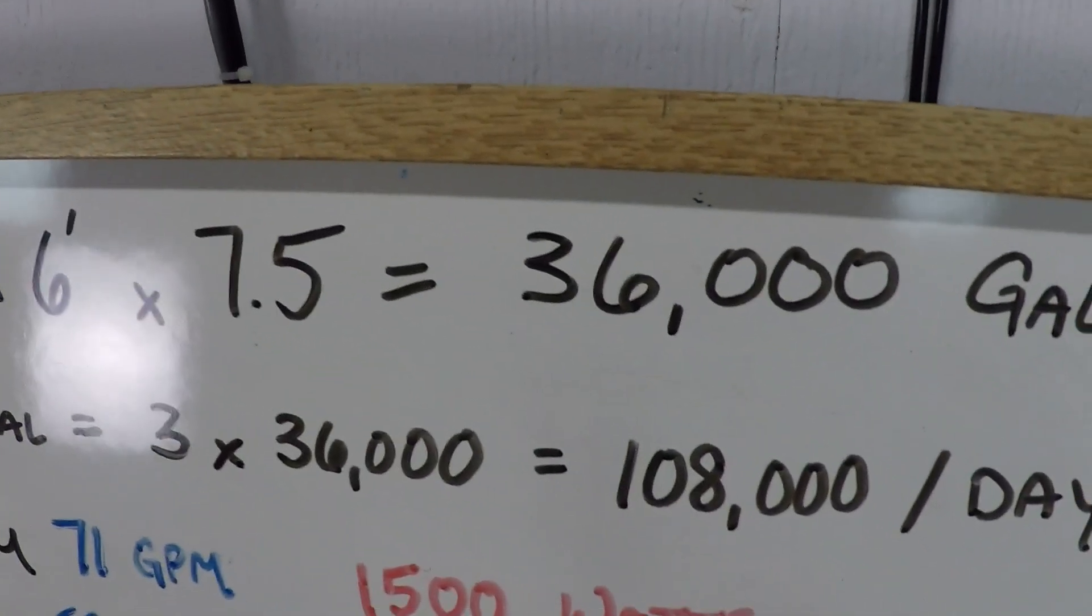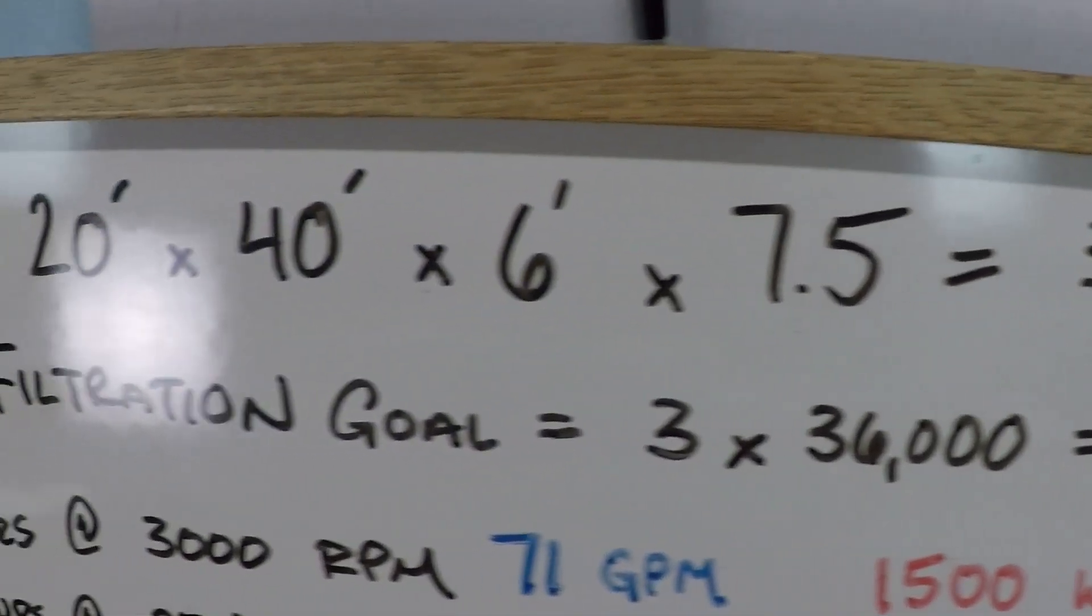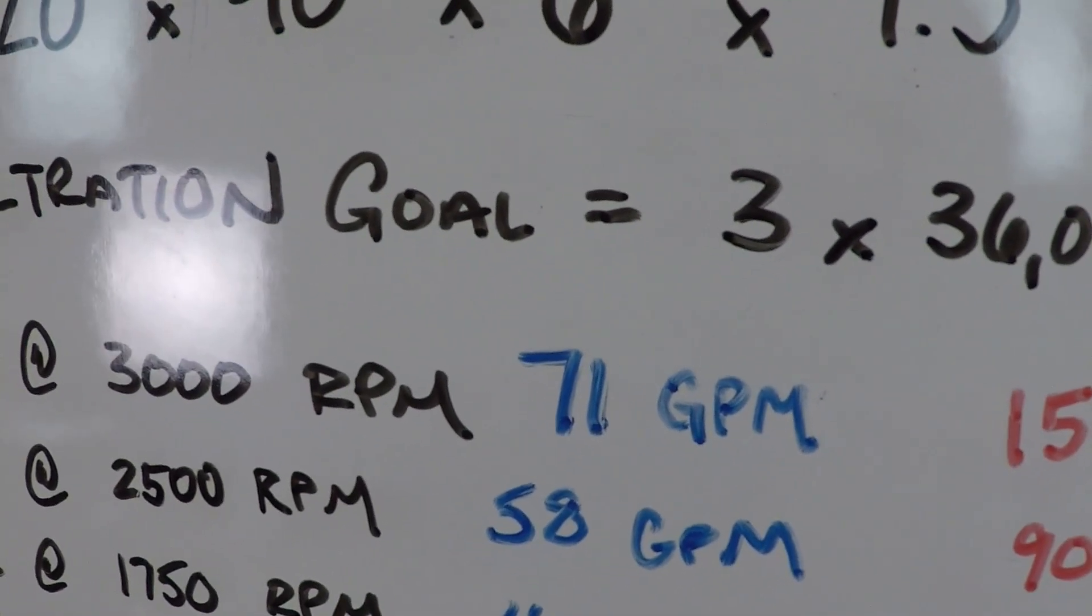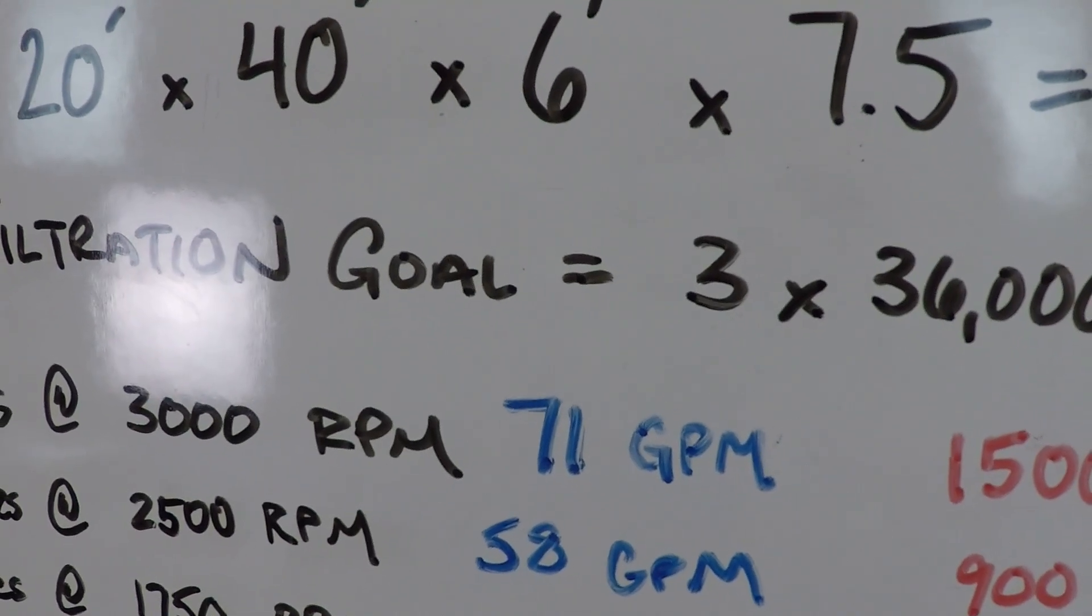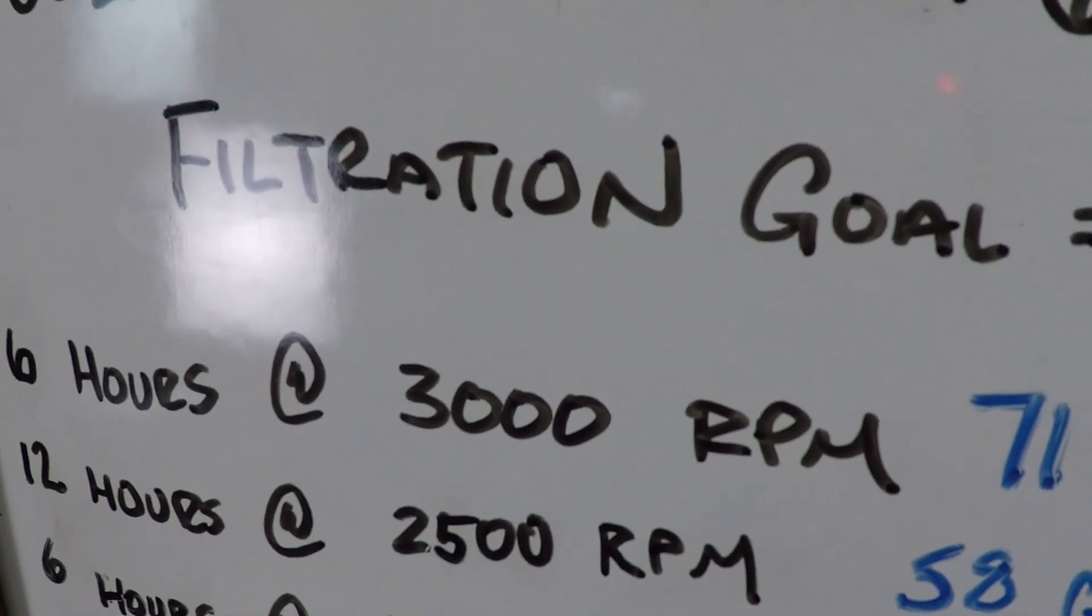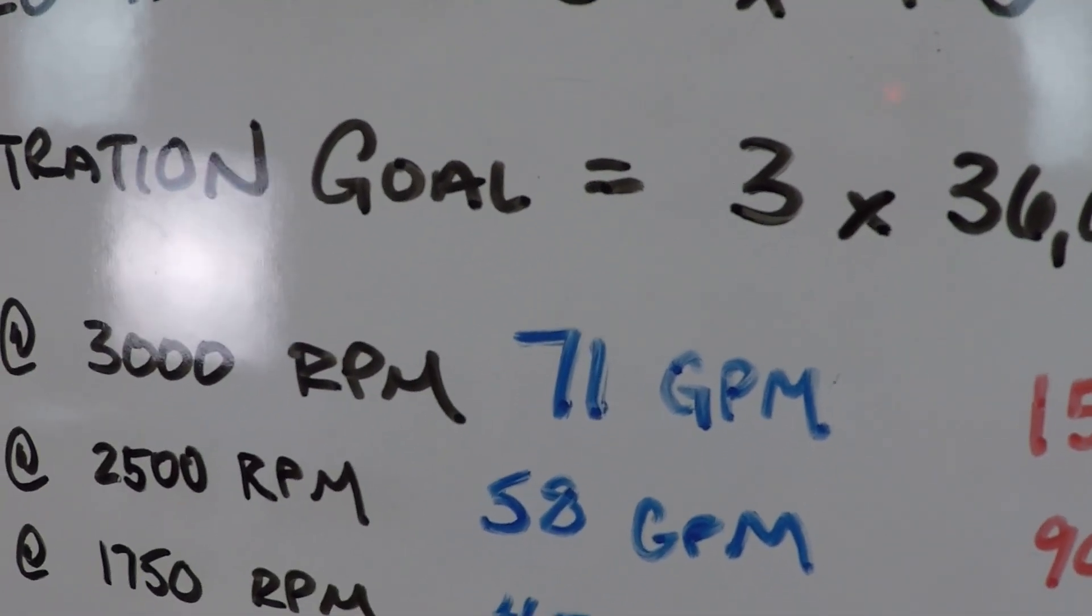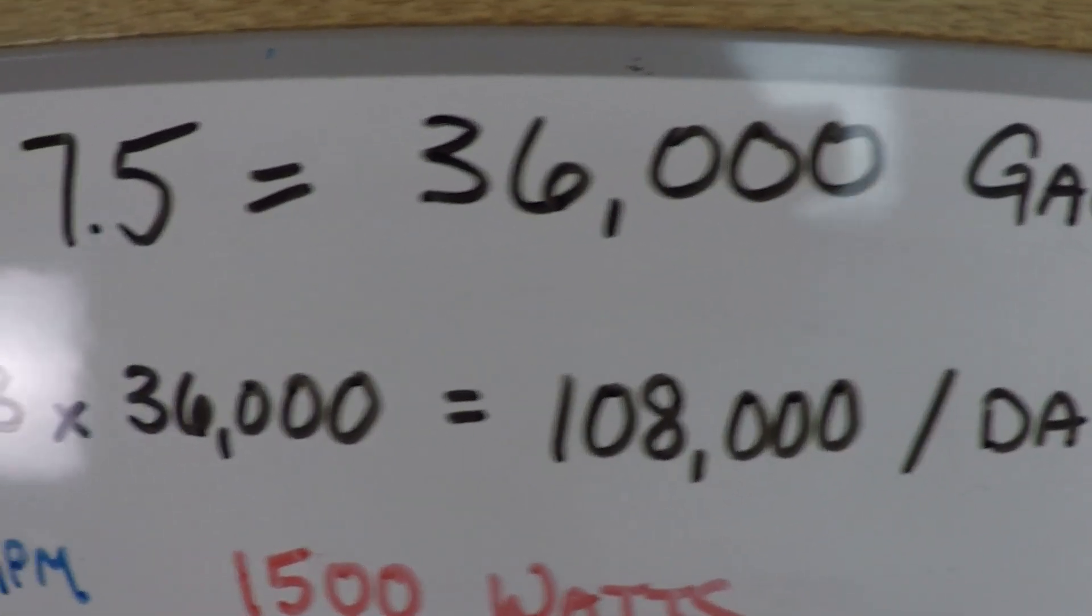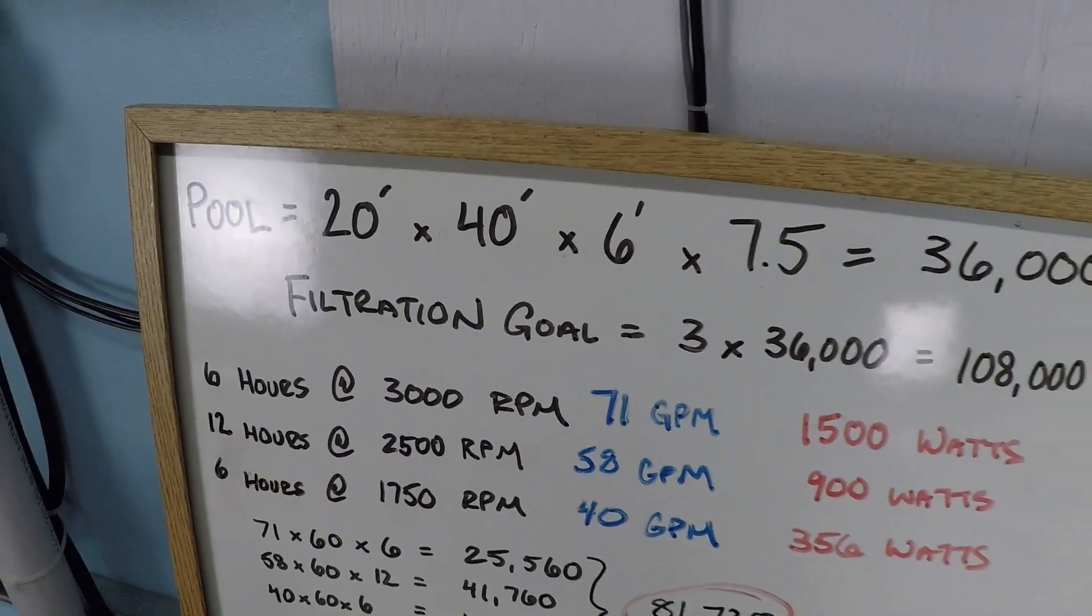What we want is 108,000 gallons of water per day. Here's the problem. At 71 gallons per minute, even if you didn't use variable speed, if you just ran the pump 24 hours a day at the maximum rpm that we can get out of this 120 volt power supply, 71 gallons per minute, that's still only I think 102,000 and change. It's still less than the goal 24 hours a day running at the highest possible speed.